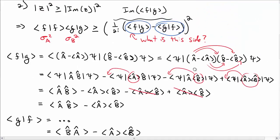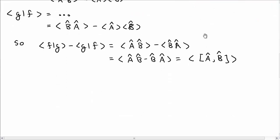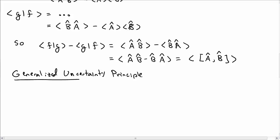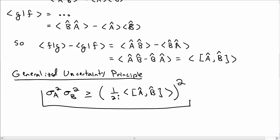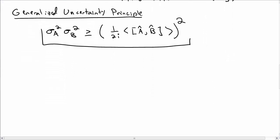That's a nice compact expression, and it is the right-hand side of the uncertainty principle. We can now write the generalized uncertainty principle: sigma-A squared times sigma-B squared is greater than or equal to the quantity 1 over 2i times the expectation value of the commutator [A-hat, B-hat], all squared. The uncertainty in A times the uncertainty in B is bounded below by the square of the commutator.